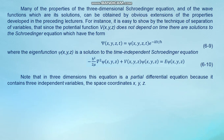Many properties of the three-dimensional Schrödinger equation and of the wave functions which are its solutions can be obtained by obvious extension of properties developed in preceding lectures. For instance, since the potential function V(x,y,z) does not depend on time, there are solutions to the Schrödinger equation of the form given by formula 6.9, where the eigenfunction psi(x,y,z) is a solution to the time-independent Schrödinger equation, formula 6.10, which is a partial differential equation containing three independent variables: x, y, z.